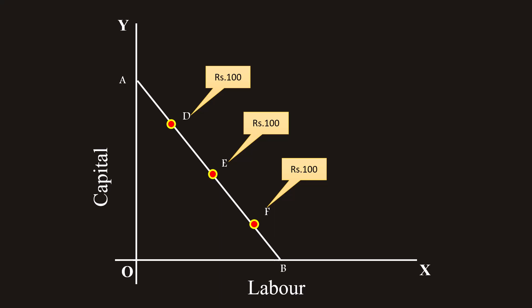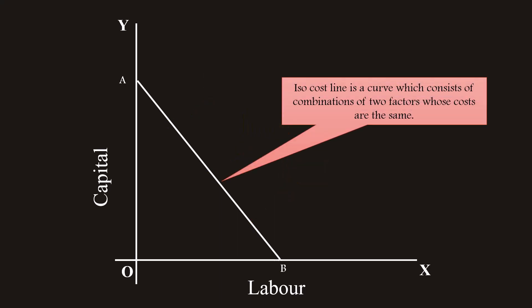This is the same with all other combinations on this curve. So, isocost line shall be defined as: isocost line is a curve which consists of combinations of two factors whose costs are the same. In short, a producer can buy any combination on the isocost curve with the same outlay.